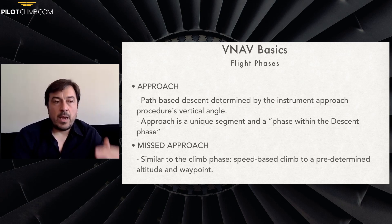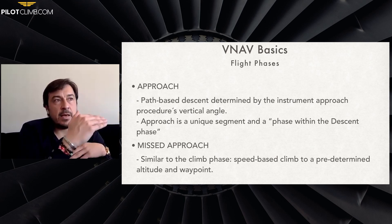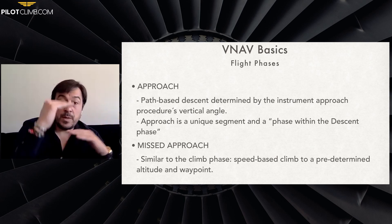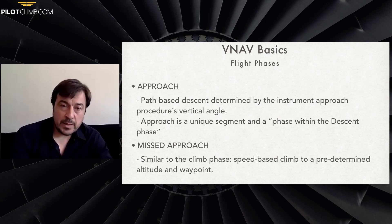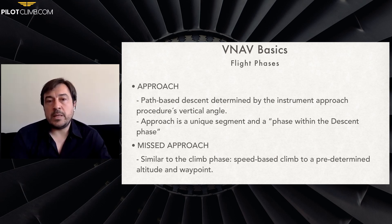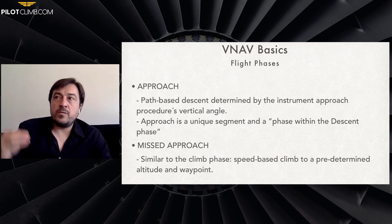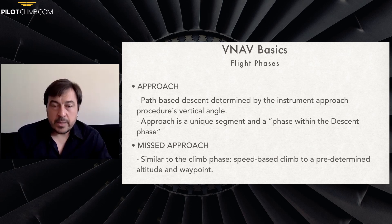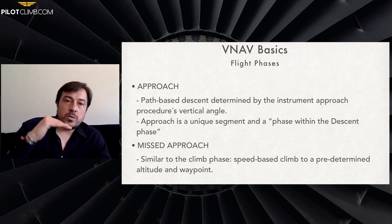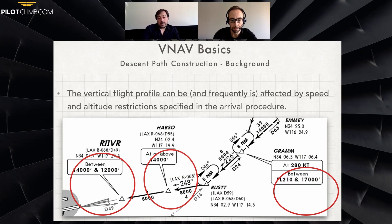VNAV gives you restrictions between some altitudes — for instance, between 17,000 and 12,000 feet you have to be within those limits, taking into account speed as well, which is really important. At some points you will have to reduce speed and not use econ speed anymore. If your econ speed is 246 but at some waypoint you need to be at 220 knots, the VNAV is going to help you and make your life a lot easier to descend according to those parameters.